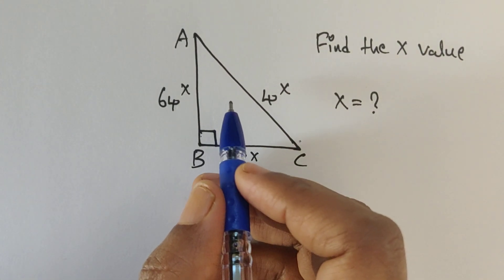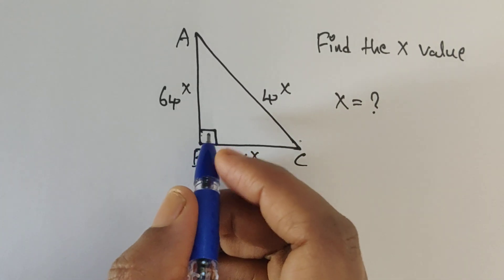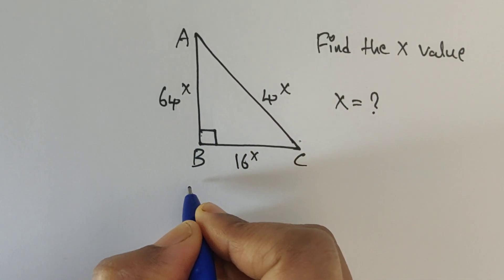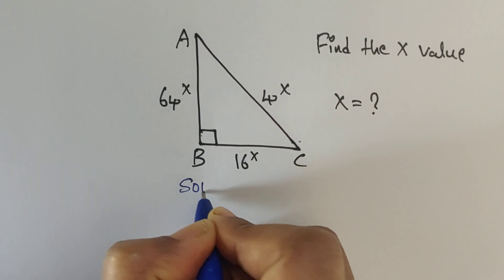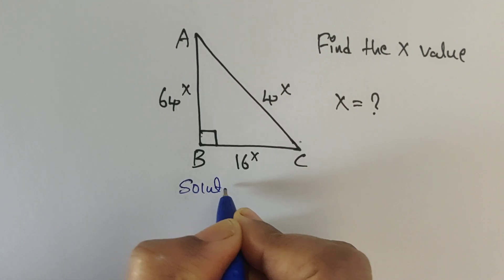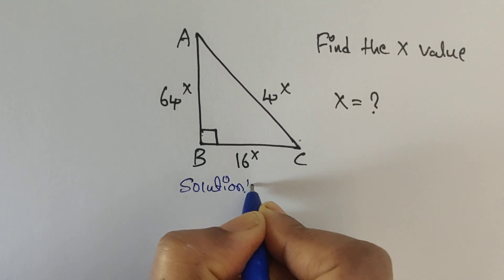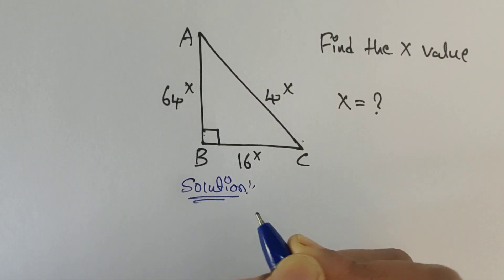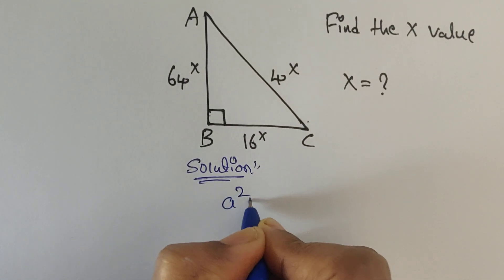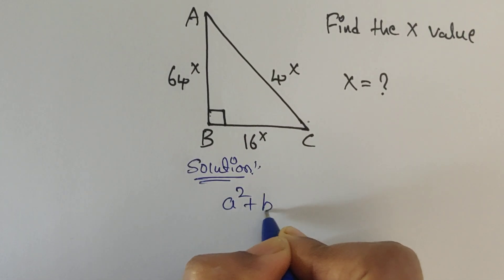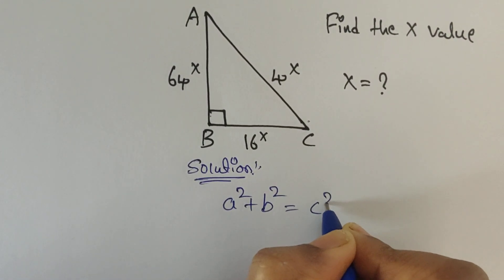So how can we find the value of x? Let's see. Solution. According to the Pythagorean theorem, the formula is a squared plus b squared equals c squared.